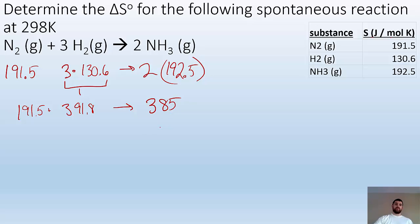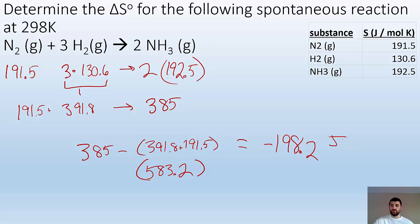Two times 192.5 gives 385. Now products minus reactants: 385 minus (391.8 + 191.5). I like doing this math first—that's 583.2. So 385 - 583.2 = -198.2 joules per mole Kelvin. You've done this before, but now for entropy, so don't freak out.